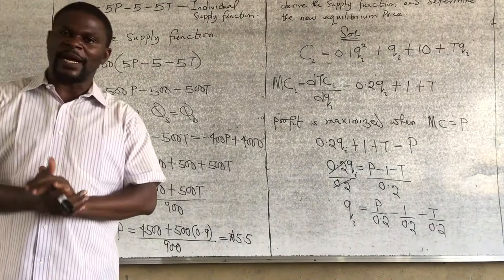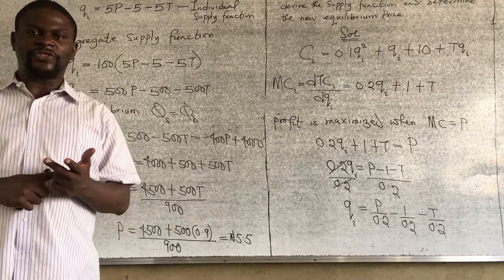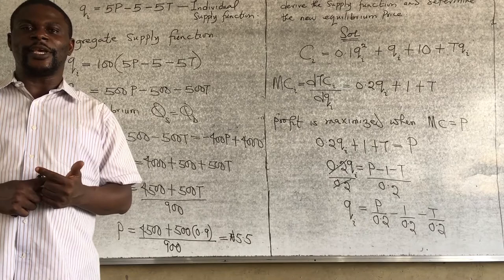We have come to the end of perfect market. In our next class, we are going to look at duopoly, including the Cournot model, Bertrand model, and Stackelberg model. Until I see you again, thank you.